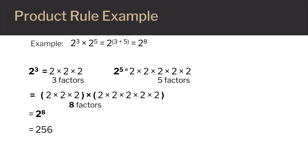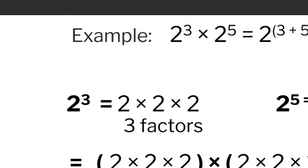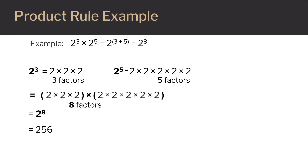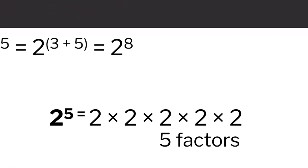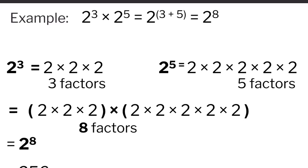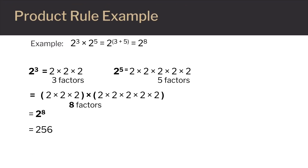Why does the product rule work the way it does? Let's take a closer look at this example in a more visual way. We're still looking at two to the third times two to the fifth power. One way to think of two to the third power is that you're taking two and multiplying it by itself three times, so you have two times two times two, or three factors. For two to the fifth power, you have two times itself five times. So we have three factors and five factors combined, that gives us eight factors. When you take two to the eighth power, you get two hundred and fifty six.